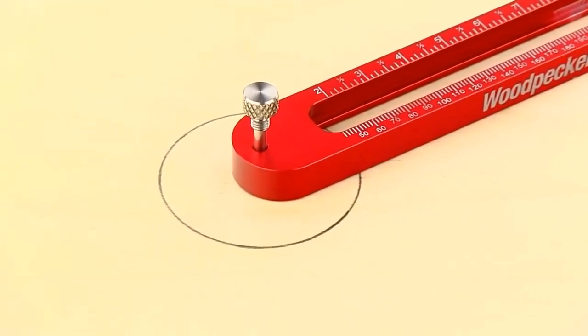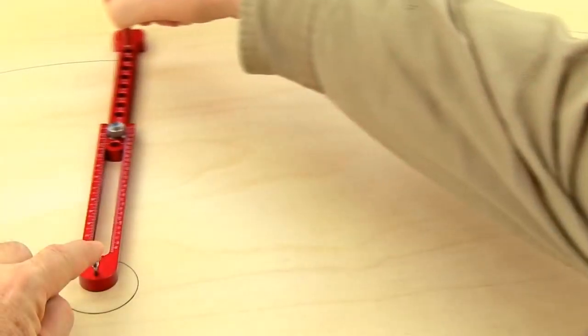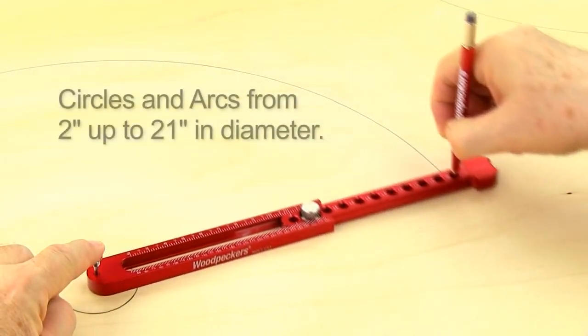The new larger sized pocket compass XL tackles circles and arcs from two inches all the way up to 21 inches in diameter.